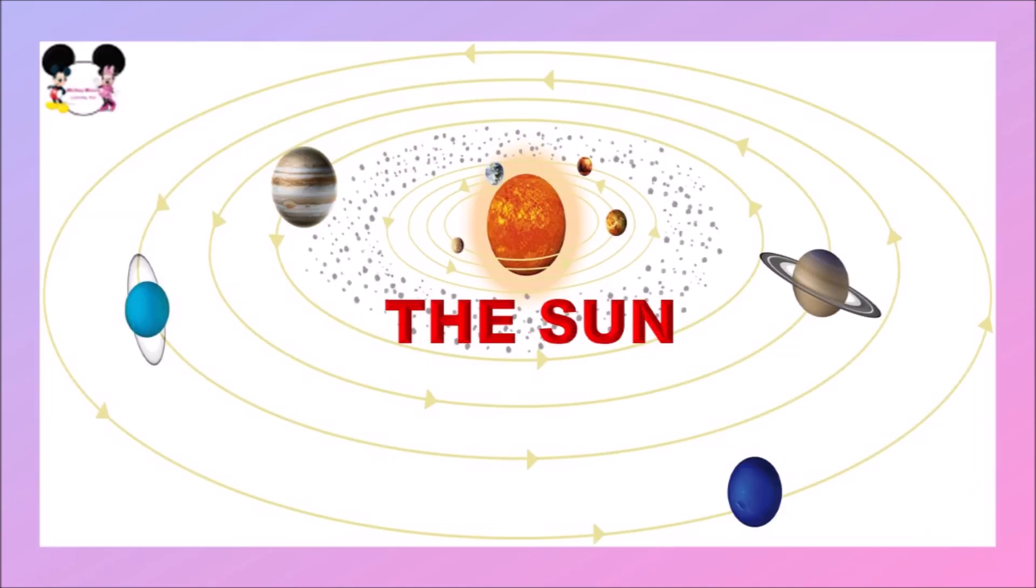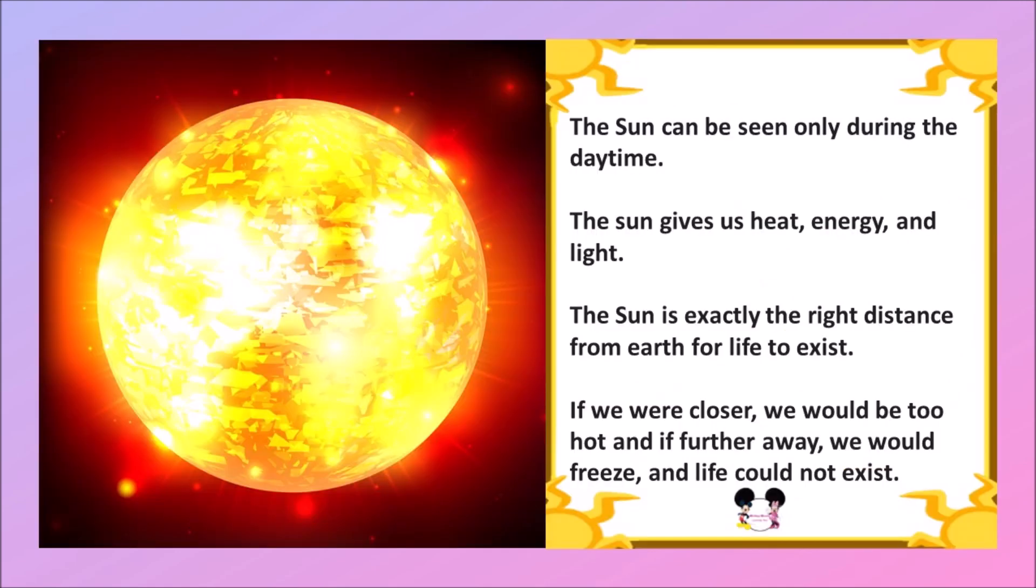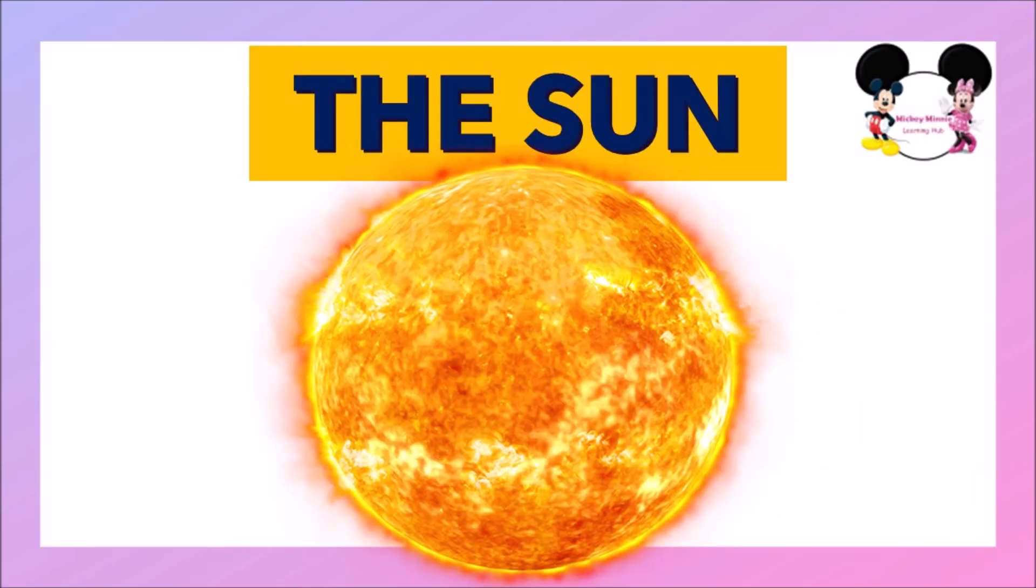The Sun gives us heat, energy, and light. The Sun is exactly the right distance from Earth for life to exist. If we were closer, we would be too hot, and if further away, we would freeze and life could not exist.